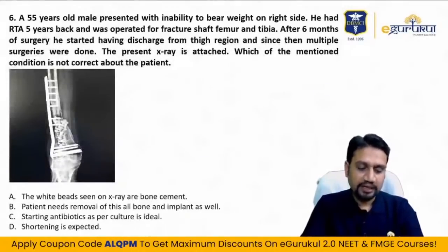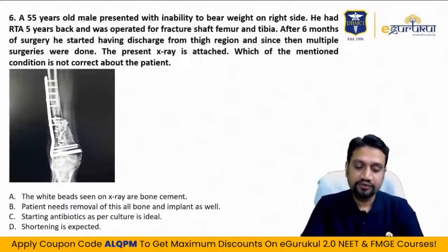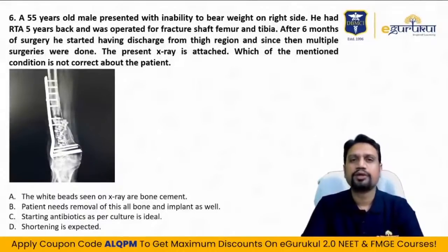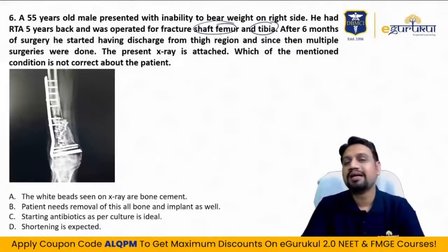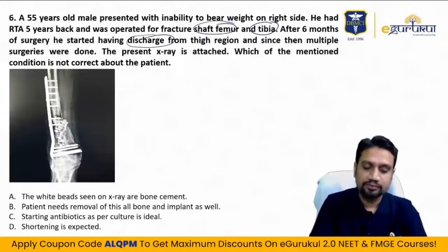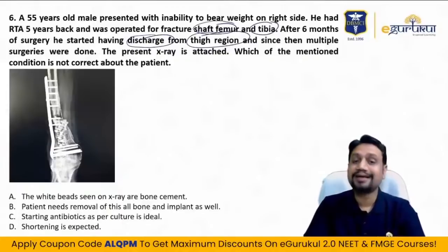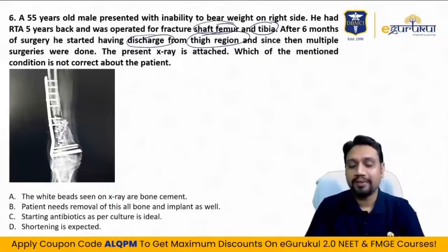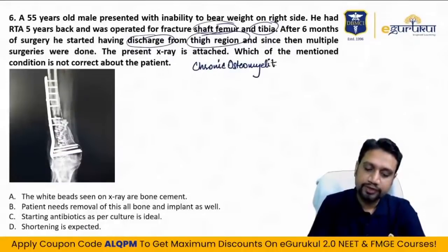Sixth question: a 55-year-old male presented unable to bear weight on the right side. He had an RTA five years back and was operated for fracture shaft of femur and tibia. After six months of surgery he started having discharge from the right thigh. Trauma, operated, discharge — osteomyelitis. Multiple surgeries were done since then. The X-ray is attached. It is a case of chronic osteomyelitis.